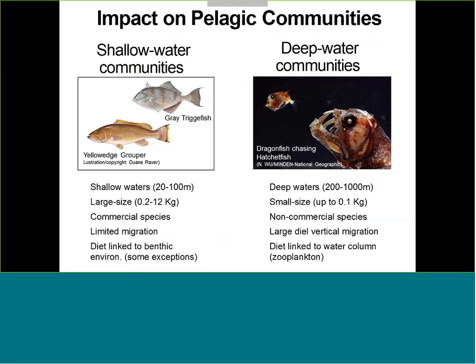We decided that to understand the potential impacts of Deepwater Horizon on pelagic communities, we needed two distinct fish communities. The shallow water communities live between 20 to 100 meters, are large in size, are commercially important species like red snapper, have limited migration, and are linked to the benthic environment. In contrast, deep water communities live between 200 and 1,000 meters depth, are small in size, not commercially important, but are food for other animals. They have large-scale vertical migration, swimming to the surface every night to eat, and their diet is linked to the water column zooplankton.